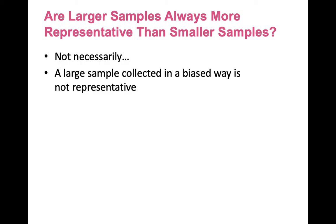Are larger samples always more representative than smaller ones? Not necessarily. It's very important to take into consideration how the sample was obtained — was it obtained using a random procedure or a non-probability technique? We could have a very large sample, but if it was a convenience sample, it's not necessarily better. The sampling technique is more important than the sample size.